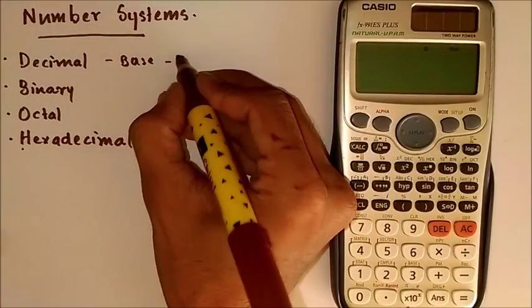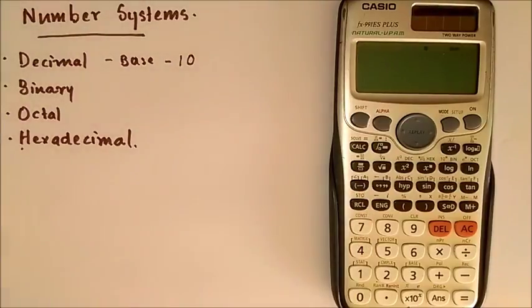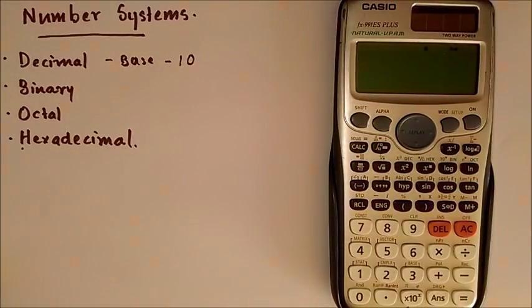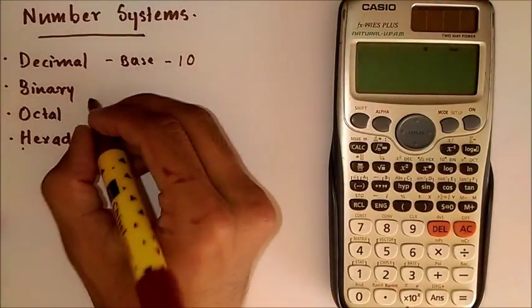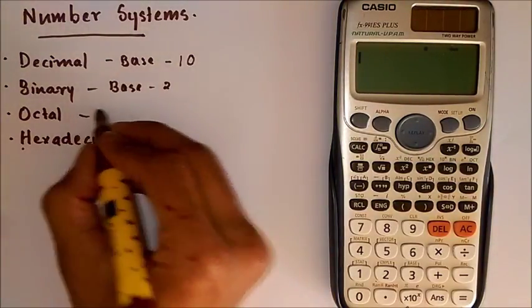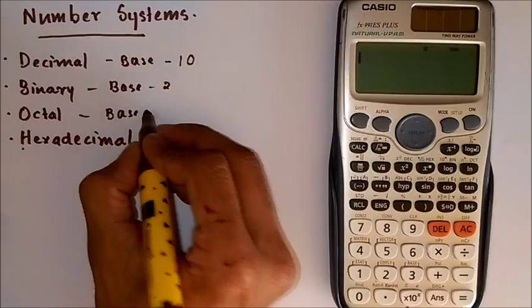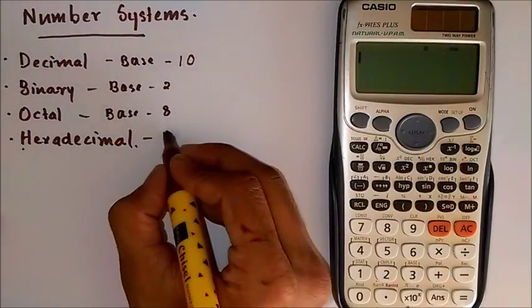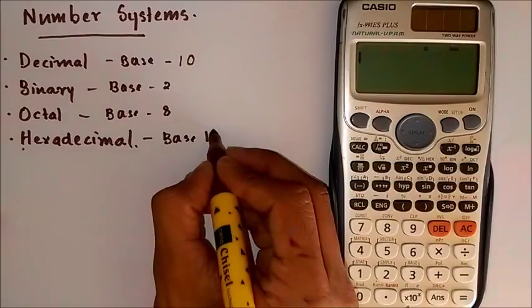For decimal it is base 10, that is there are 10 different values used to represent each digit. Similarly binary is base 2, octal as the name suggests is base 8, and finally hexadecimal uses base 16.